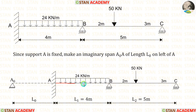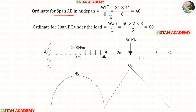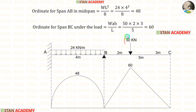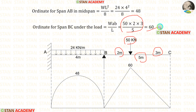Now let us take spans AB and BC and make the second equation. For span AB, we have already made the ordinate. Now let us make the ordinate for span BC. In span BC, there is a point load of 50 kN. This point load is not acting at the center. The formula to calculate the maximum bending moment is WAB/L. Here W = 50, A = 2, B = 3, L = 5. When we apply the values, we get 60.